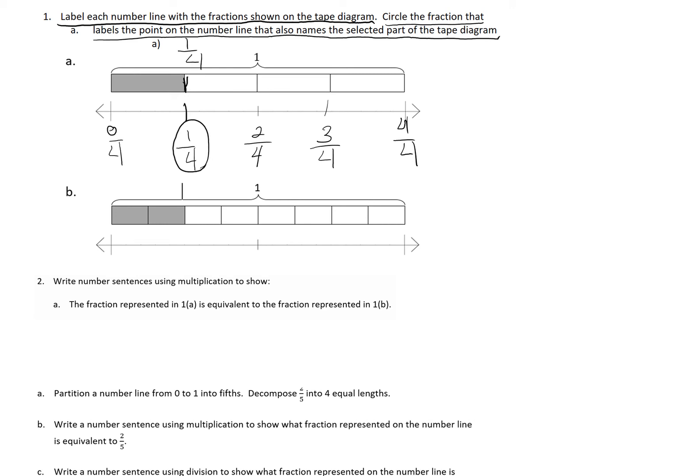B is the same concept. We have 2 eighths being shown. So when I label the number line, I have 0 eighths, 4 eighths is in the middle, 8 eighths makes one whole, and I'm going to fill in the other fractions, 1 eighth, 2 eighths, 3 eighths.